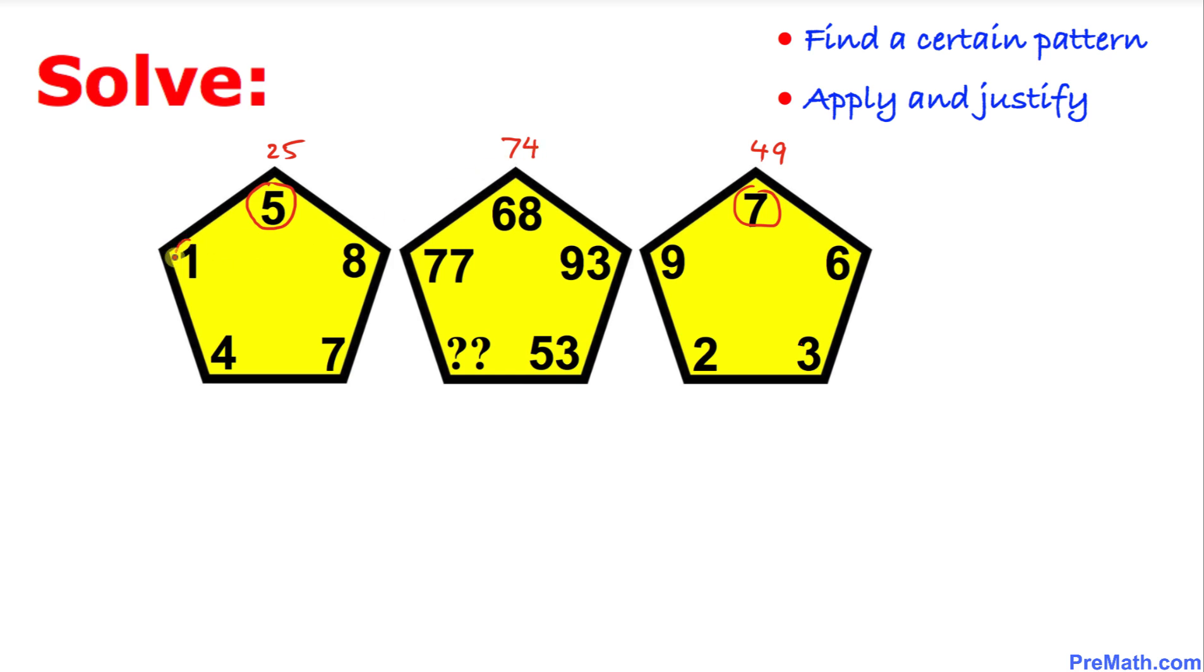Likewise we are going to square this one, 1 squared is 1 and 9 squared is 81. If we add these that is going to give us 82 for this number.